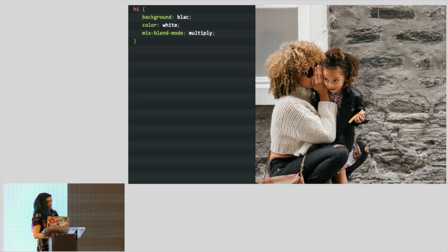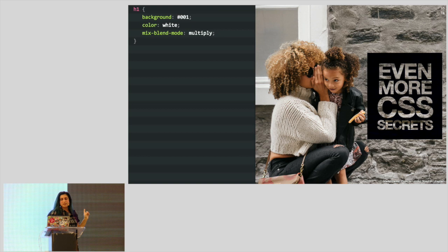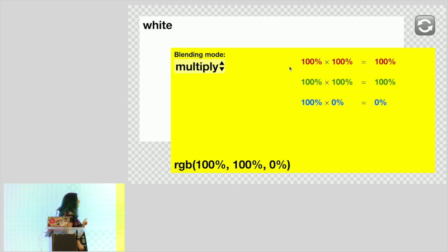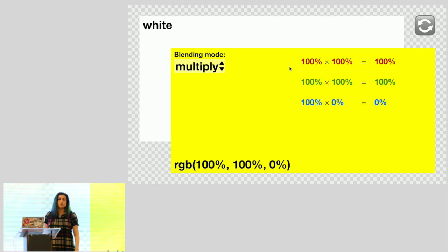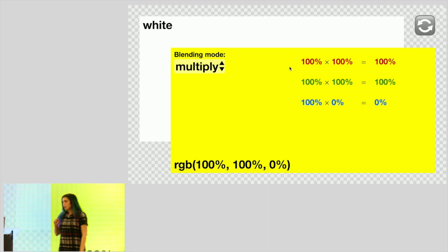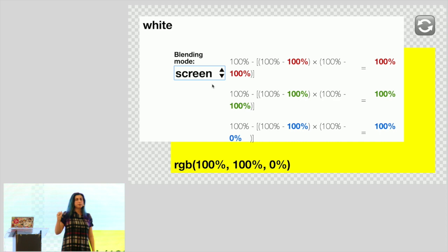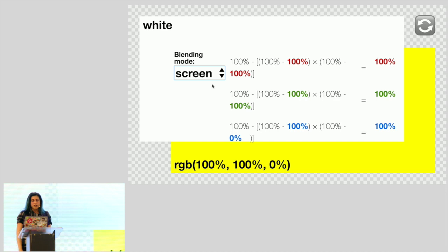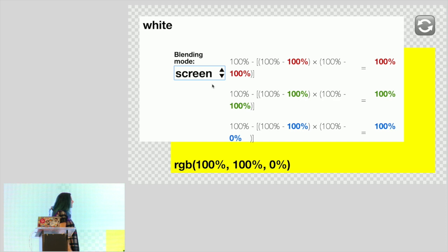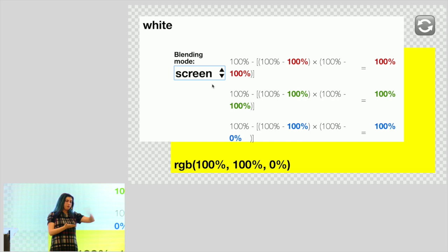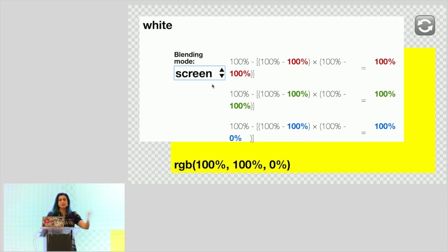Now you might be wondering: what if I want a white element with cutout text instead of black? You're in luck — it's a similar technique but uses a slightly different blending mode called Screen. The way Screen works: you invert the two colors, multiply them, then invert the result. That's why it subtracts everything from 100%. This gives you the opposite result. Screen always gives you something at least as light as the lightest of your two colors — it's the opposite of Multiply.